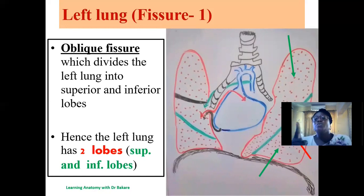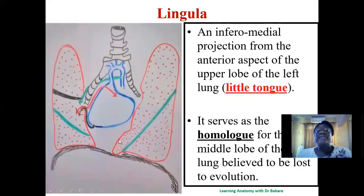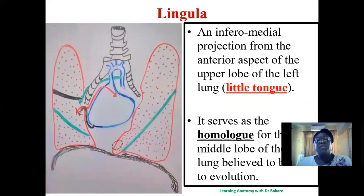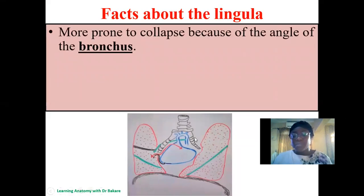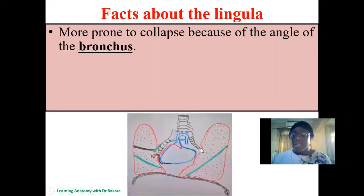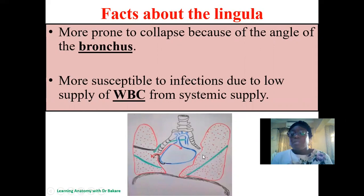The lingula is a projection seen on the inferior medial side of the left lung only. It is like a little tongue extending from the lower border of the left lung and serves as the homologue of the middle lobe. The lingula is prone to collapse because of the angle at which the bronchus enters the lungs, meaning insufficient air may reach it. It is also more susceptible to infection due to reduced blood supply and therefore fewer white blood cells reaching this region.